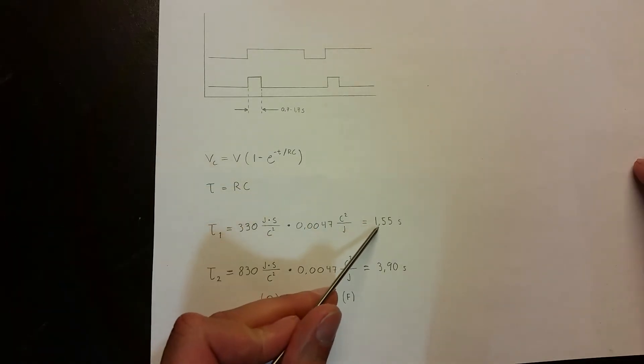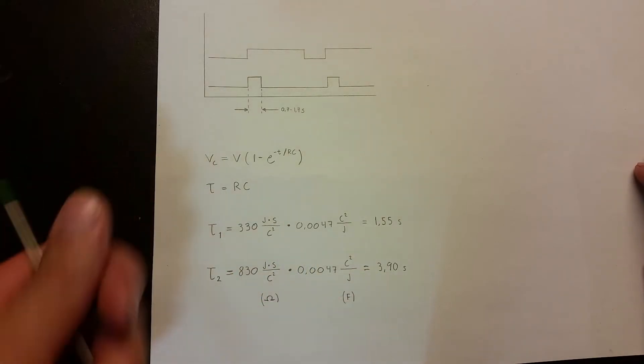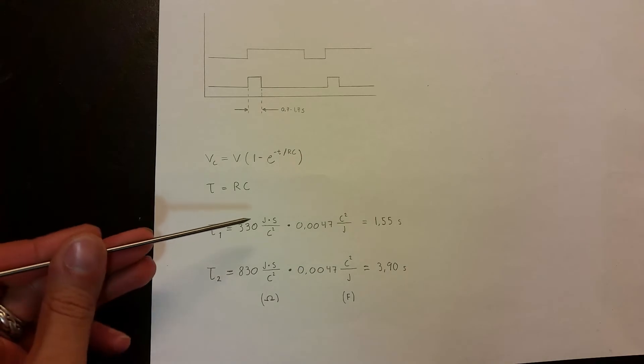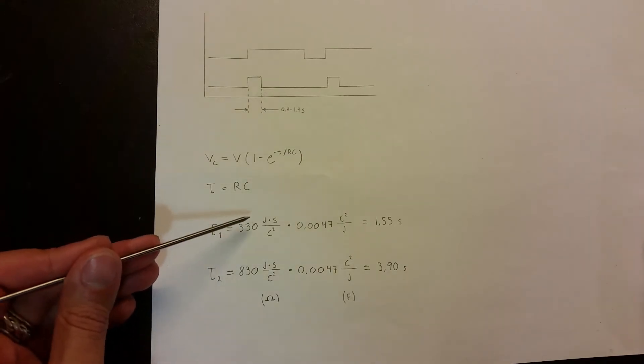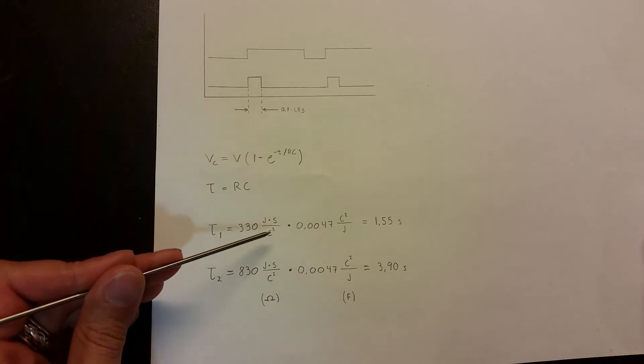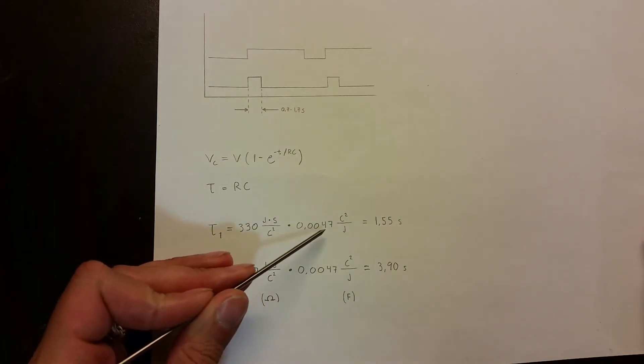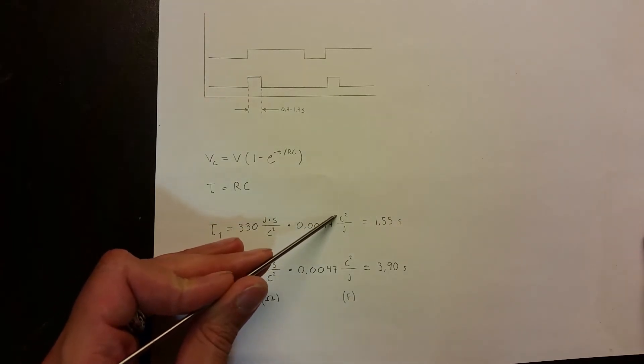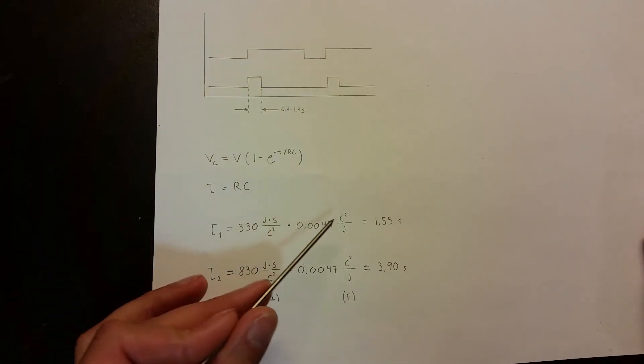And this is quite interesting. The duration here is like 0.7 to 1.7 seconds, but when I did the equation here it shows that it would be like 1.55 seconds or 3.9 seconds depending on where you have the potentiometer. All the way down, the resistance is 330 ohms or joules times second through coulomb squared, and the capacitance is 4700 microfarads or coulomb squared over joules. You can see here this coulomb squared cancels out and same with the joules, so you are left with seconds.